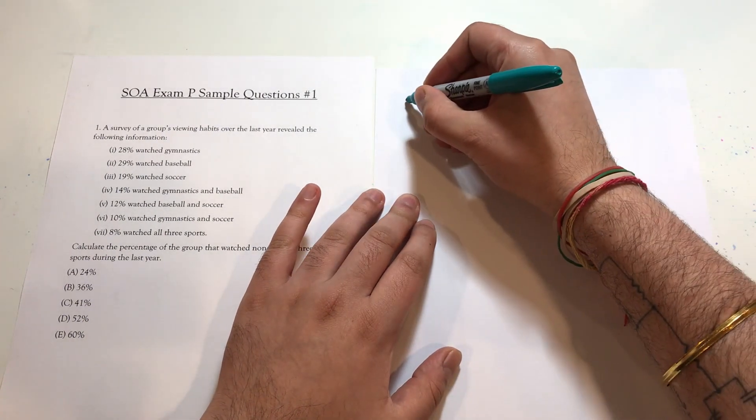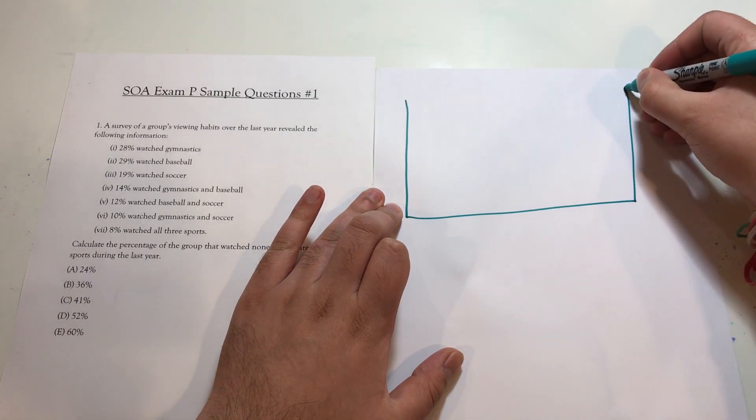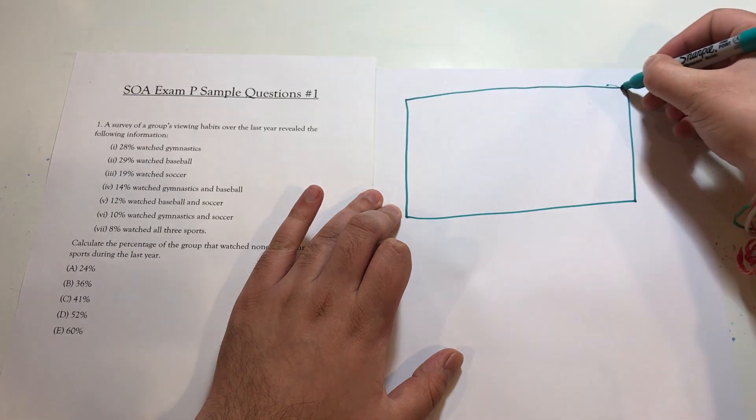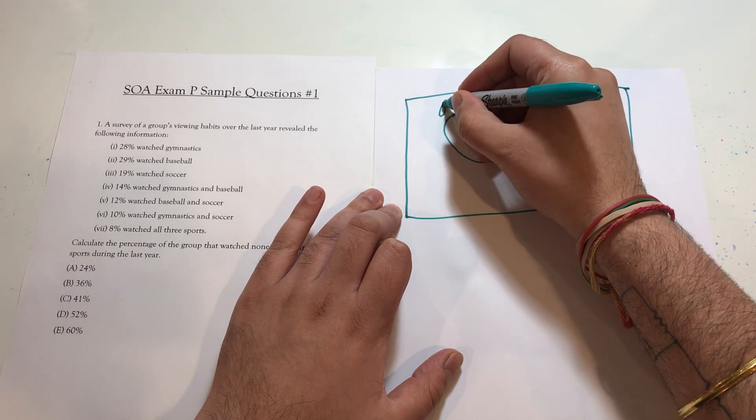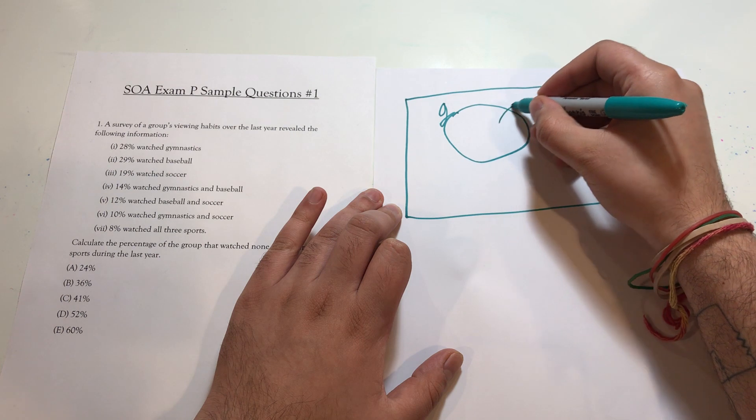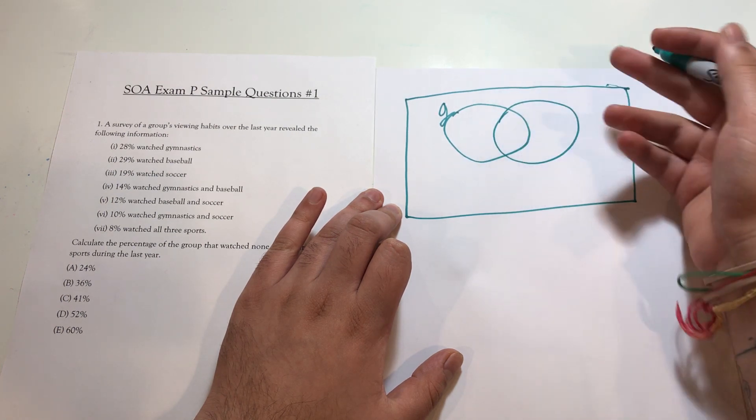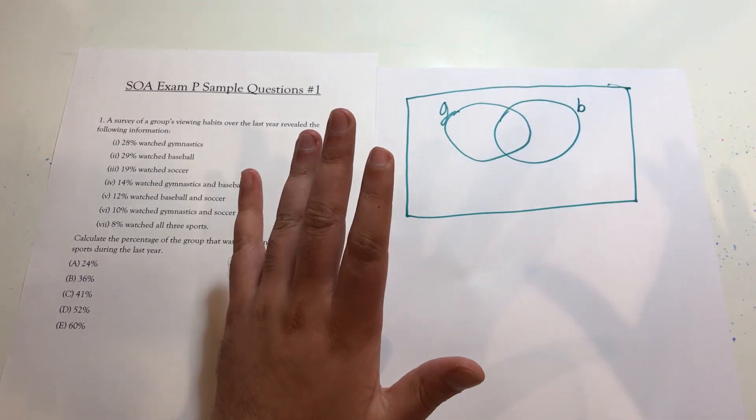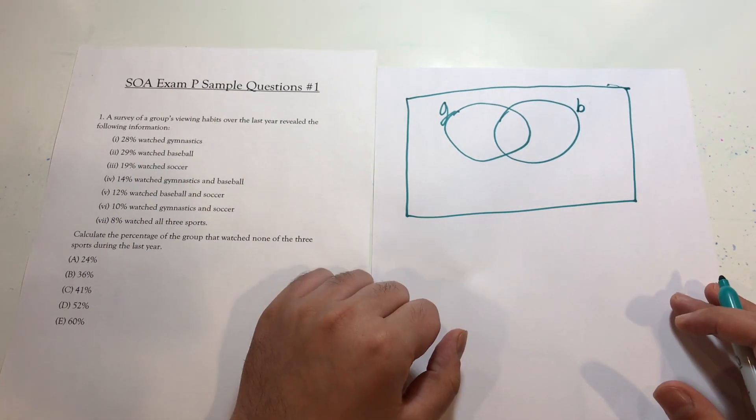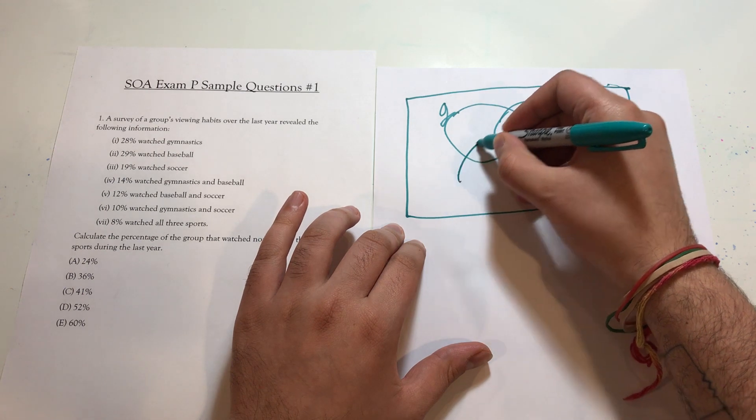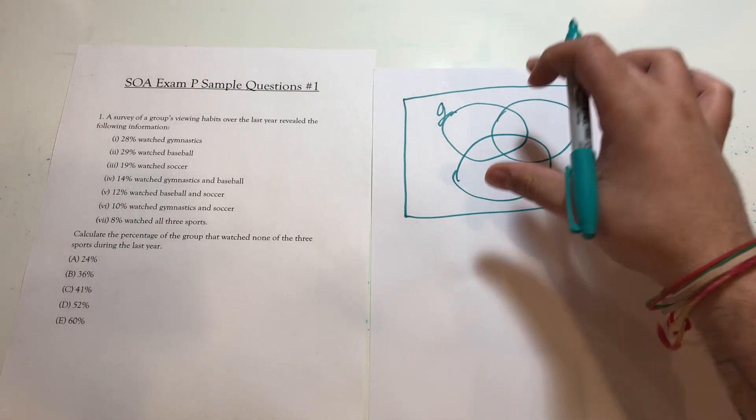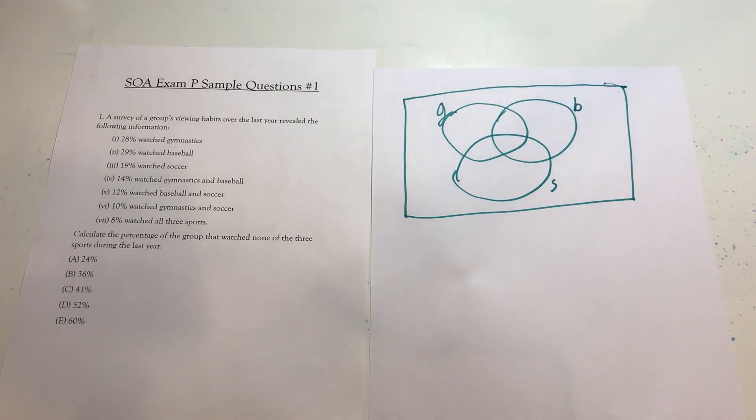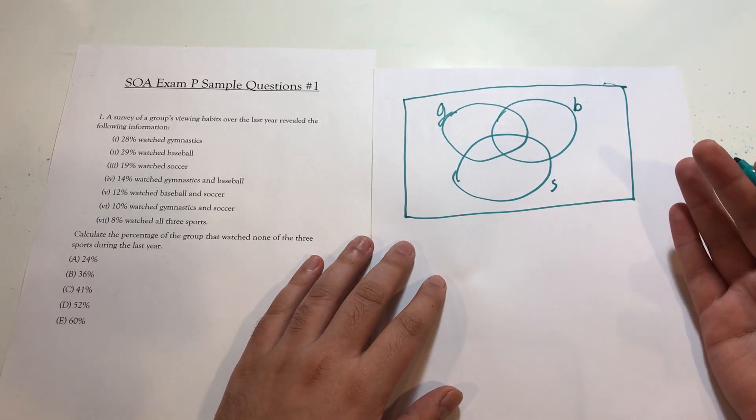So I'm going to draw out my sample space of all the different possibilities of viewers. Somebody could watch gymnastics. Somebody could watch baseball, or they could watch gymnastics and baseball. They aren't mutually exclusive, as given by the information here. Or they could watch soccer. And then anything outside of the circles in the square would obviously be people that watched none of them. And you'll see why this diagram is helpful in just a second, but let's start filling it in.